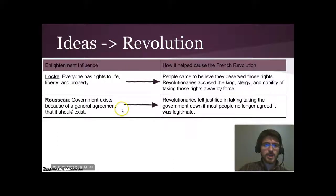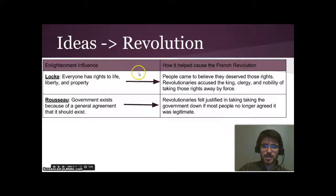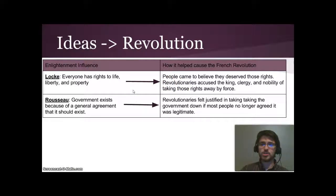Here's how these ideas led to revolution. Locke had the idea that everyone has the rights to life, liberty, and property. As people came to believe they deserved those rights, revolutionary leaders were able to accuse the king, clergy, and nobility of taking away those rights by force — which was a very powerful and meaningful accusation.